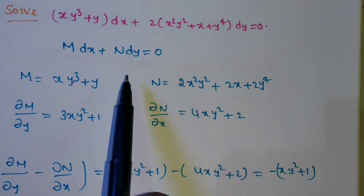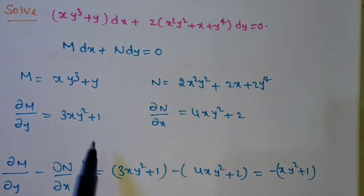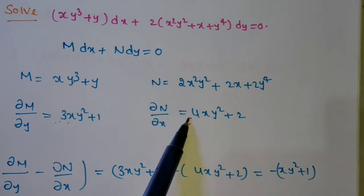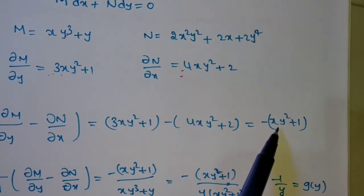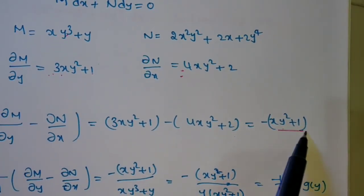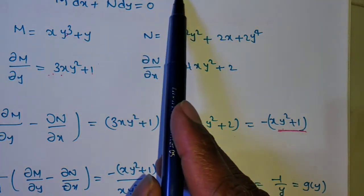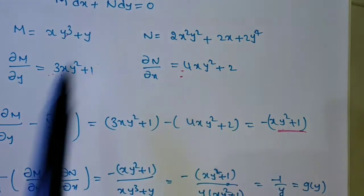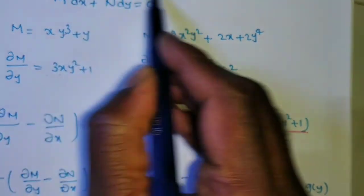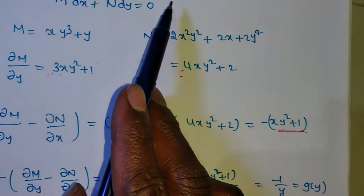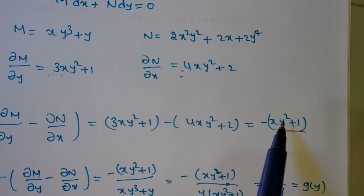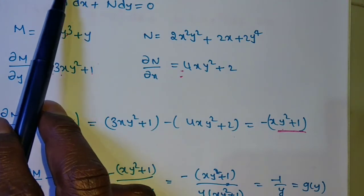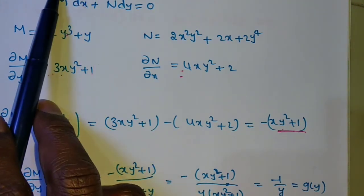Apply Rule 4/5: find ∂M/∂y minus ∂N/∂x. That gives 3xy²+1 minus (4xy²+2) = −xy² − 1, or minus of (xy²+1). Dividing by N has 3 terms and won't simplify. Check dividing by M: M = xy³+y, so y is common, giving y(xy²+1). Then (xy²+1) cancels from numerator and denominator, leaving −1/y = g(y).